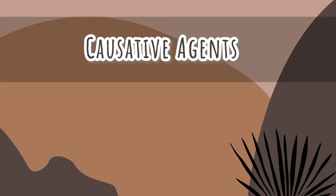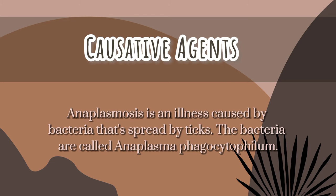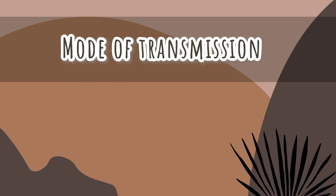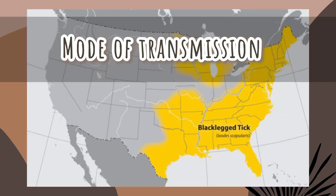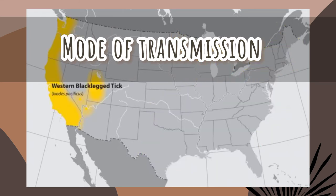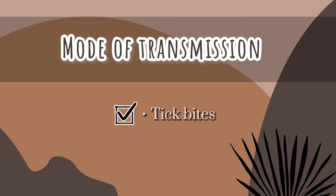For the causative agents, anaplasmosis is an illness caused by bacteria spread by ticks. The bacteria are called Anaplasma phagocytophilum. For the mode of transmission via tick bites, Anaplasma phagocytophilum is primarily spread to people by the bite of an infected tick. In the United States, the bacteria is carried by the black-legged tick in the northeast and mid-eastern United States, and the western black-legged tick along the west coast. Remember that a tick needs to stay attached for 4 to 24 hours to transmit the bacteria, so removing a tick soon after the bite occurs can prevent transmission.